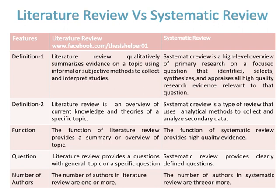A Literature Review addresses a general topic or a specific question, while a Systematic Review addresses clearly defined questions. The number of authors in a Literature Review is one or more, while the number of authors in a Systematic Review is three or more.